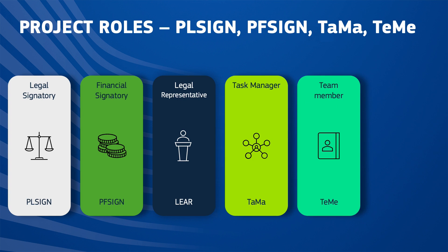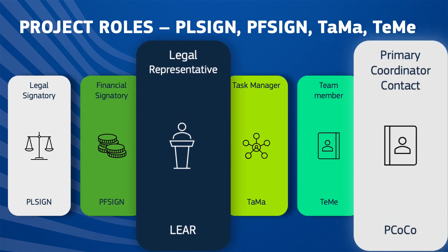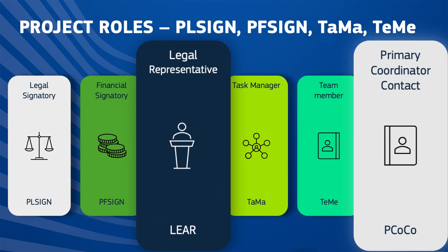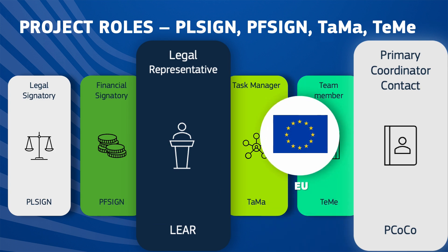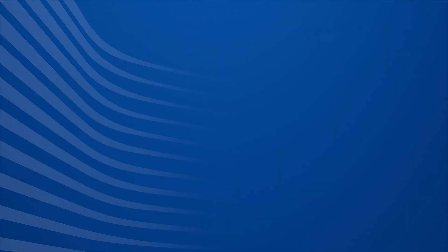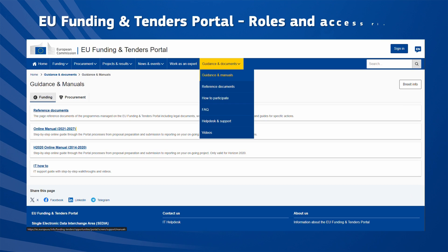Project Legal and Financial Signatories can nominate or revoke Task Managers and Team Members in their own organization for auxiliary tasks. All of these roles can be freely assigned and managed by the organizations and consortium according to their needs, except for the LEAR and the Primary Coordinator Contact, who need the intervention of the Commission.